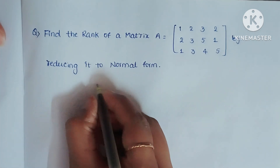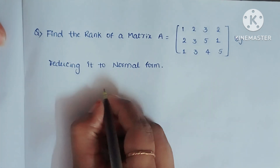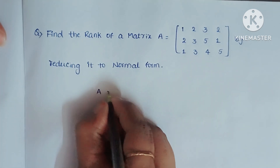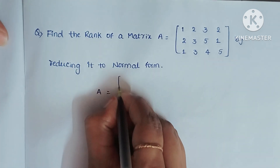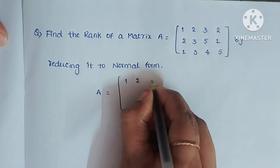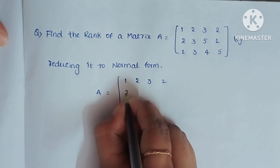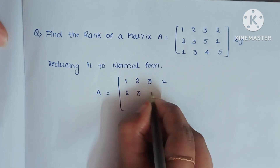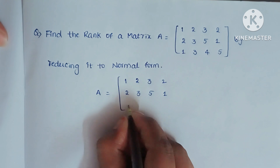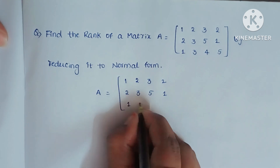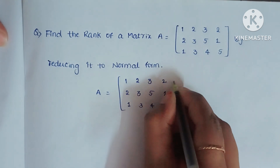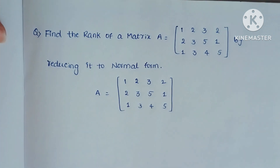Now we will write the A matrix here. A equals to [1, 2, 3, 2; 2, 3, 5, 1; 1, 3, 4, 5]. This is the given matrix.